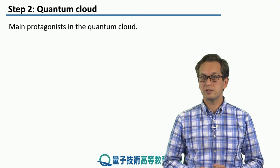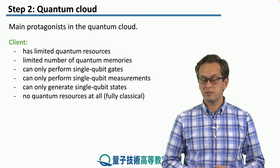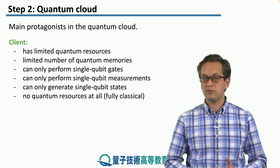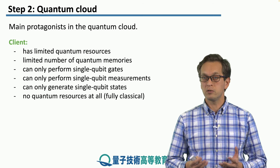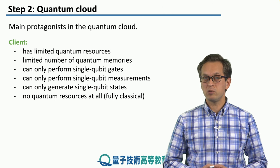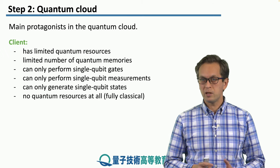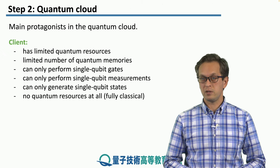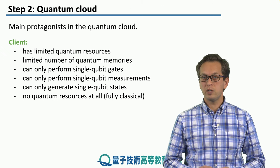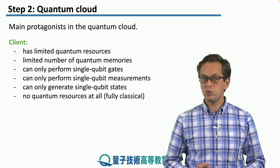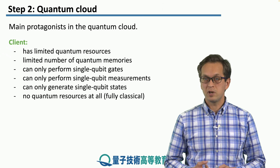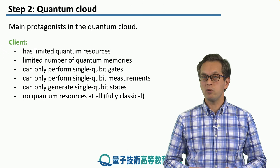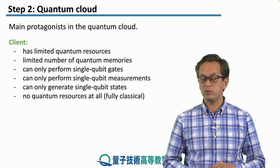The main protagonists in the quantum cloud are the client. The client is basically anybody who cannot run their own fully-fledged quantum fault-tolerant computation. So they have some limited quantum resources, and how they are limited could vary by scenario. For example, they could be limited in terms of the number of quantum memories they have access to, or they could only perform simple operations like single qubit gates or single qubit measurements, or they can generate only single qubit states. Or in fact, they could have no quantum resources whatsoever — the client could be fully classical.